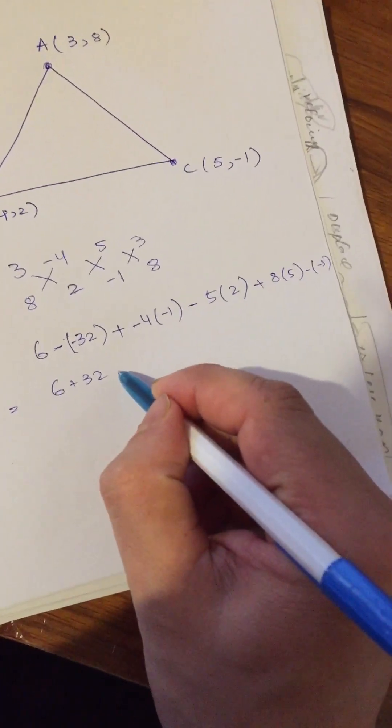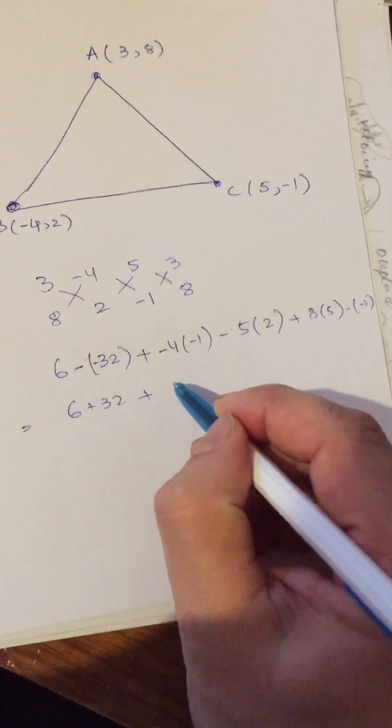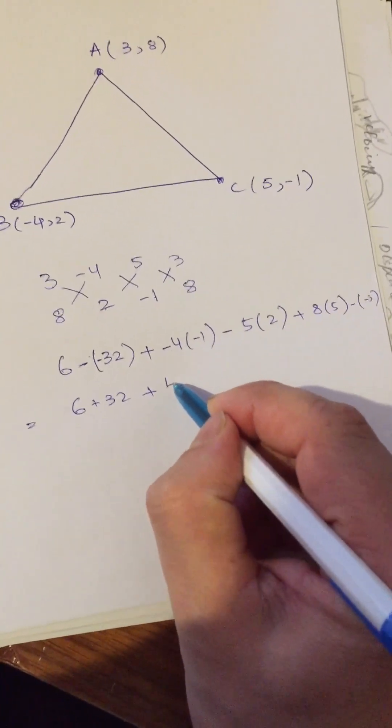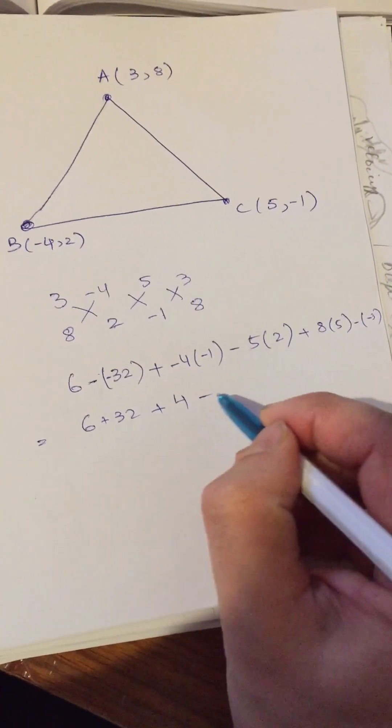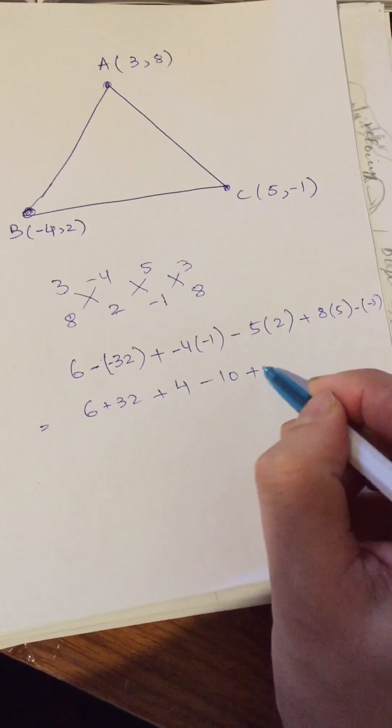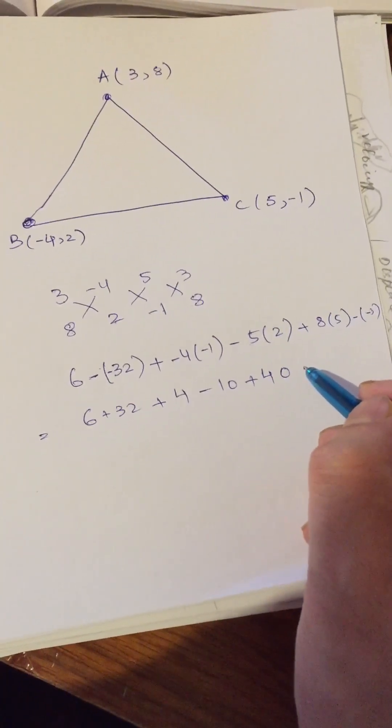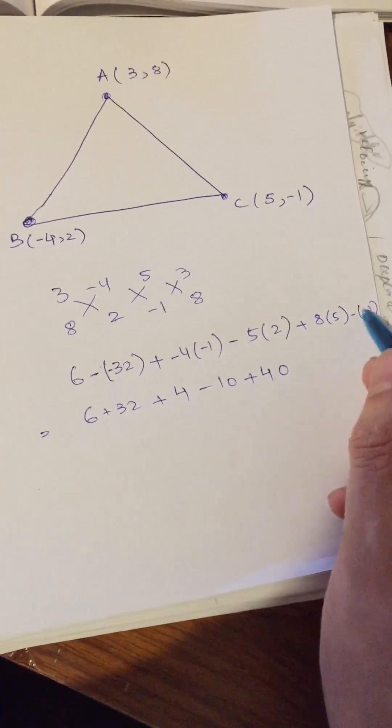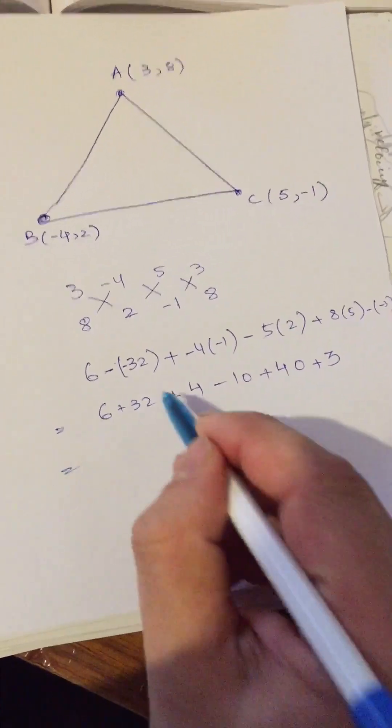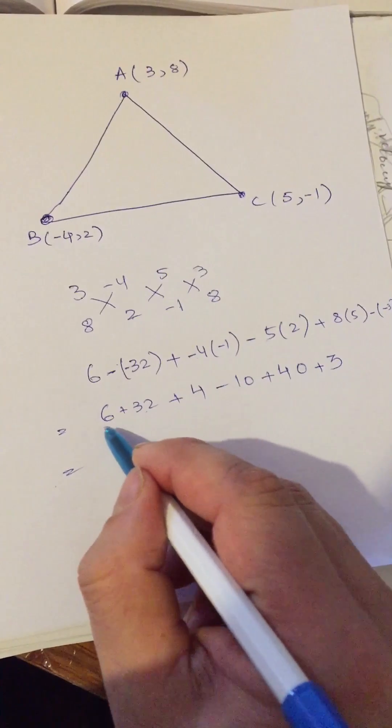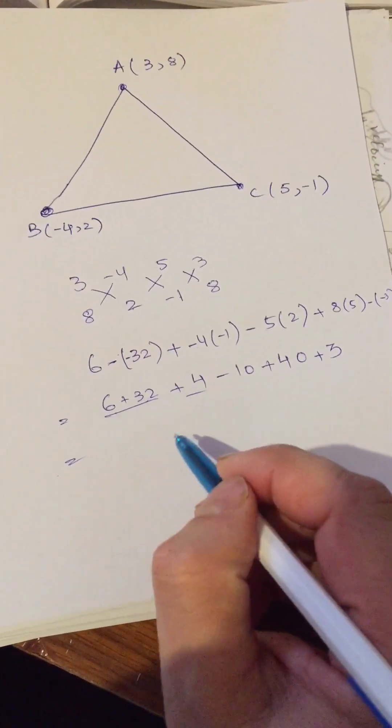It is plus 32. Then we have plus, minus 4 into minus 1, it is again positive 4. Then we have minus 5 into 2 is 10. Plus, it is 8 into 5 is 40. 40, minus minus is again plus, plus 3.